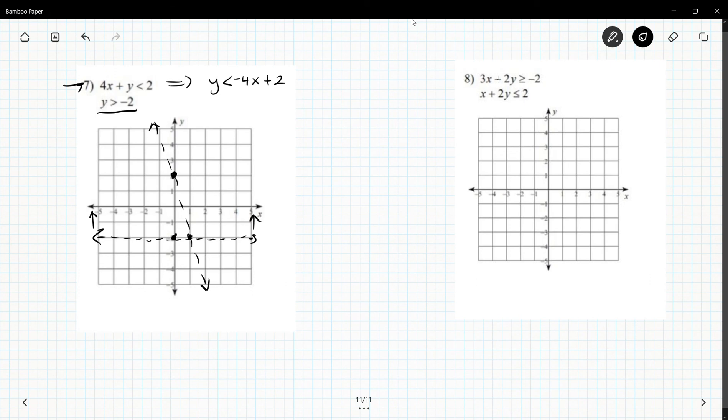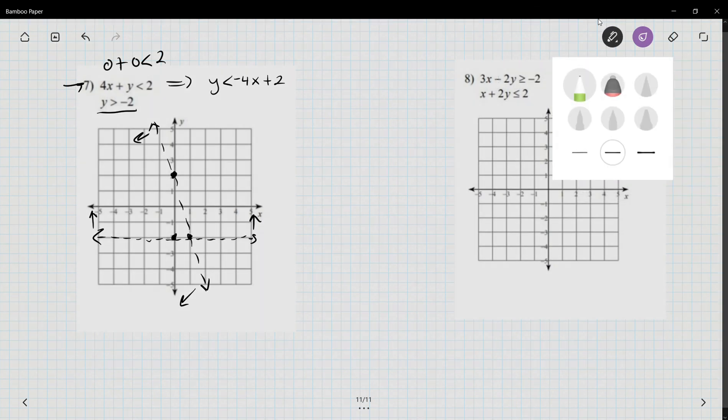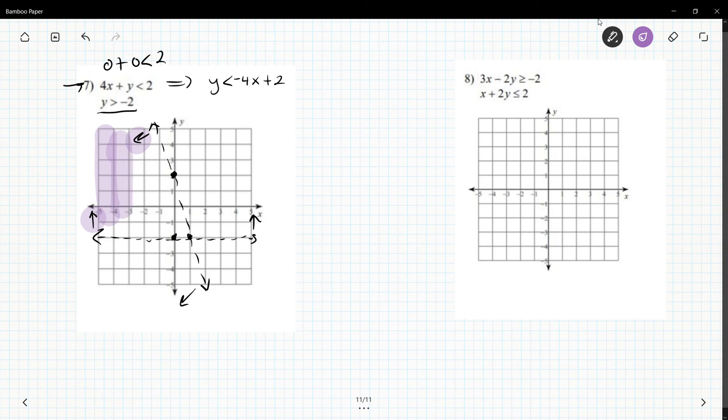And I could plug in zero into this. Zero plus zero is less than two, is that a true statement? Yes, that means I'm going to shade this side. And if I look where the arrows are pointing towards each other, I see that this arrow and this arrow are pointing to the same region so it is all of this that gets shaded.